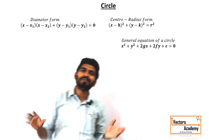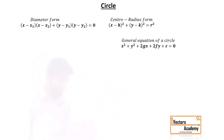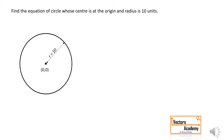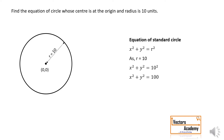Now let's look at some simple examples based on these equations. In this example we need to find the equation of a circle whose center is at the origin and the radius is 10. Since the center is at the origin, this is a standard circle and the equation is x² + y² = r². Substituting r = 10, we get x² + y² = 100.